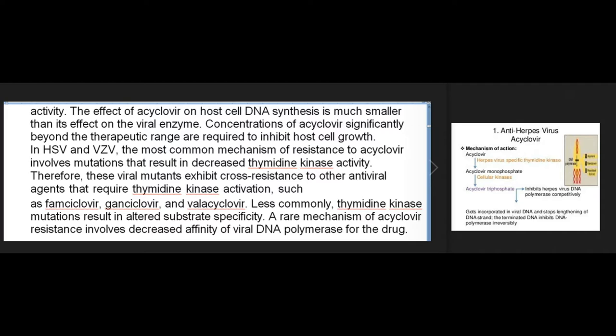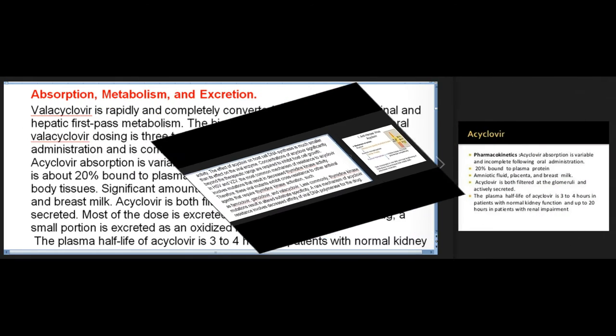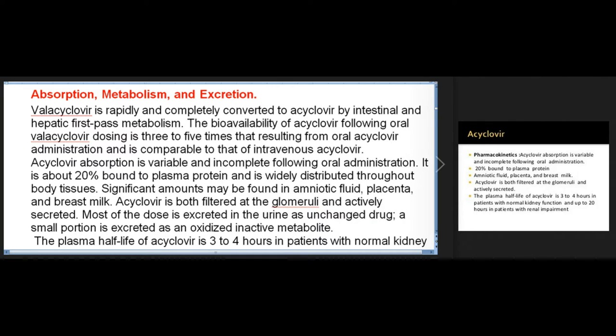The effect of acyclovir on host cell DNA synthesis is much smaller than its effect on the viral enzyme; concentrations significantly beyond the therapeutic range are required to inhibit host cell growth. In HSV and VZV, the most common mechanism of resistance to acyclovir involves mutations that result in decreased thymidine kinase activity; therefore these viral mutants exhibit cross-resistance to other antiviral agents requiring thymidine kinase activation, such as famciclovir, ganciclovir, and valacyclovir. Less commonly, thymidine kinase mutations result in altered substrate specificity. A rare mechanism of acyclovir resistance involves decreased affinity of viral DNA polymerase for the drug.